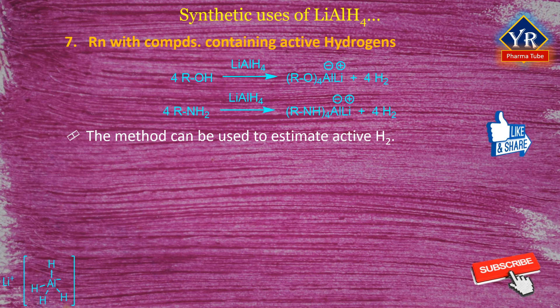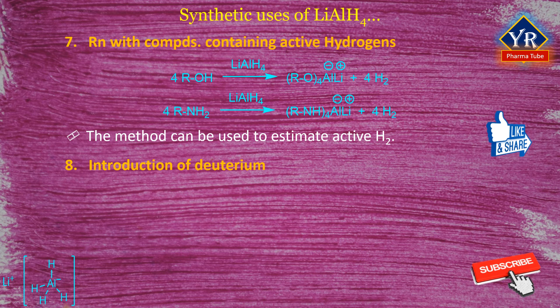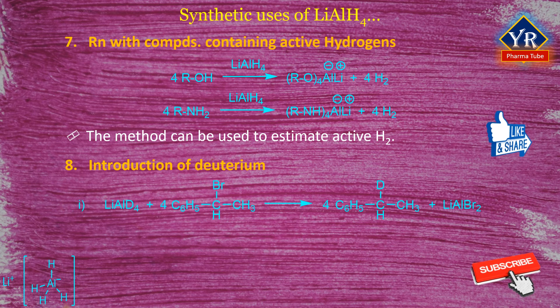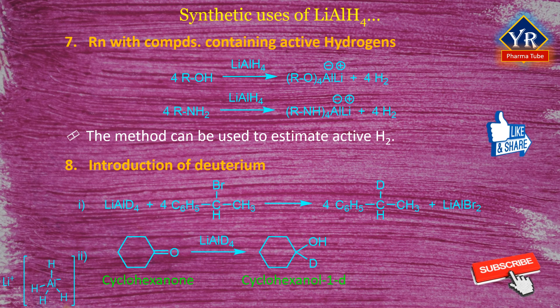Number 8: Introduction of deuterium in organic molecules. Lithium aluminium deuteride has been used for introducing deuterium into organic compounds. For example, deuterium is introduced into 1-bromoethylbenzene and cyclohexanone by lithium aluminium deuteride.